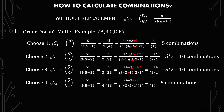The last one we're going to go over is 5 choose 4. We have 5 factorial over 4 factorial times 1 factorial — and those again add up to 5. Expanding: 5 times 4 times 3 times 2 times 1 over 4 times 3 times 2 times 1 times 1. Those cancel out, which equals 5 over 1, or 5 combinations.